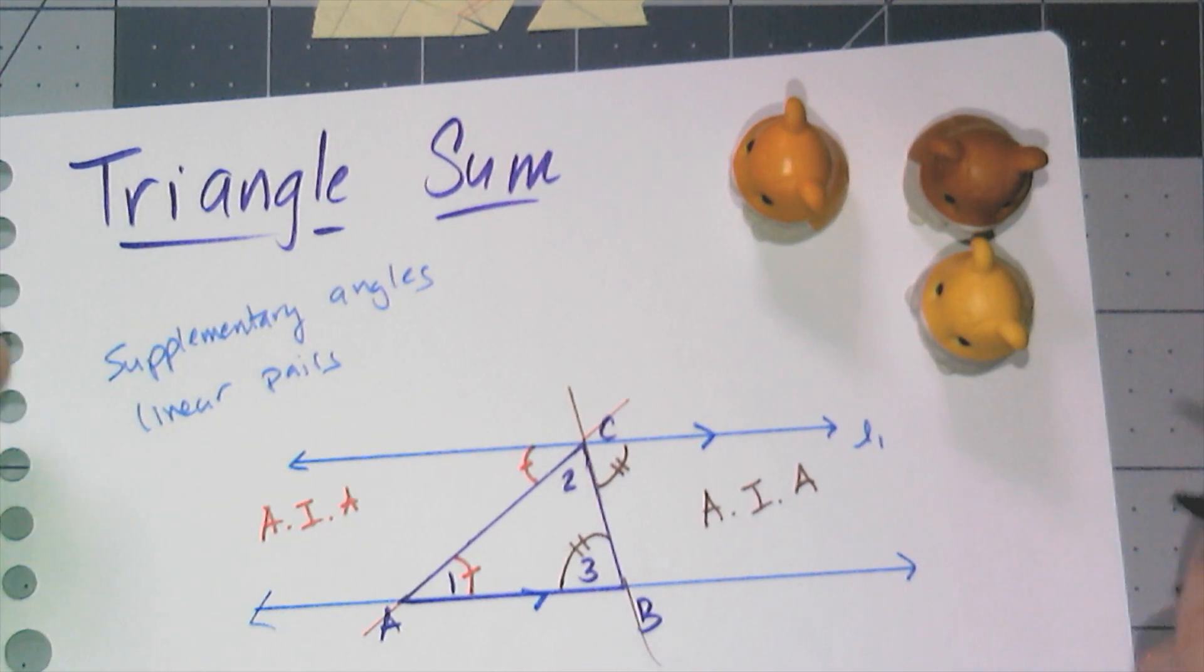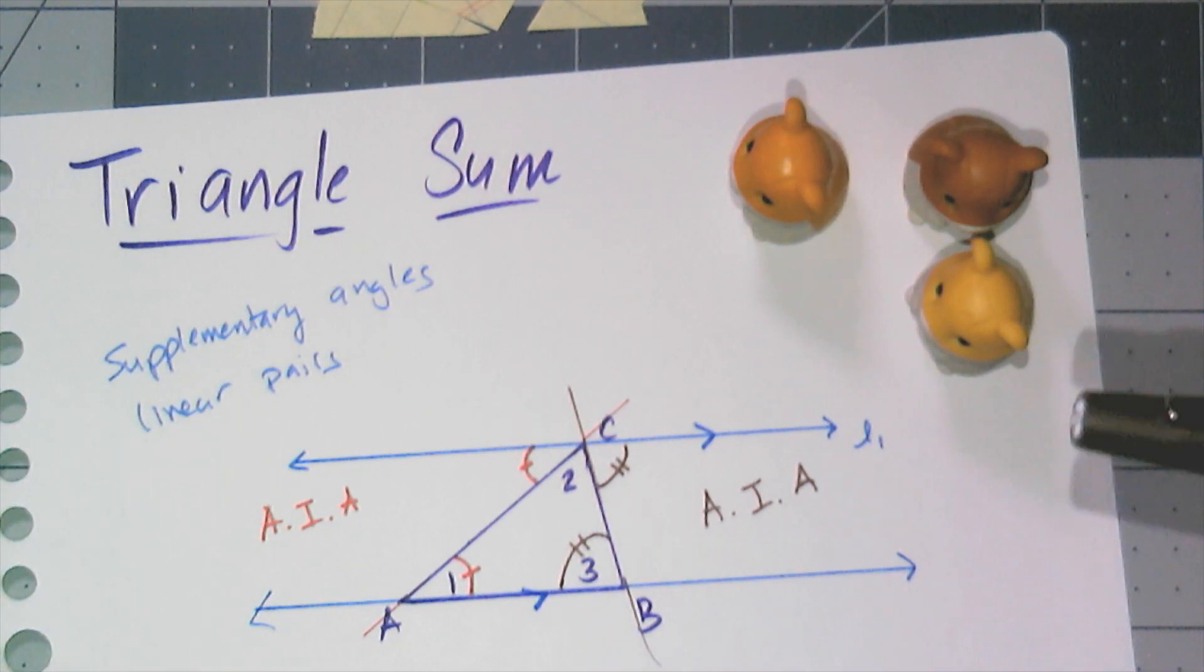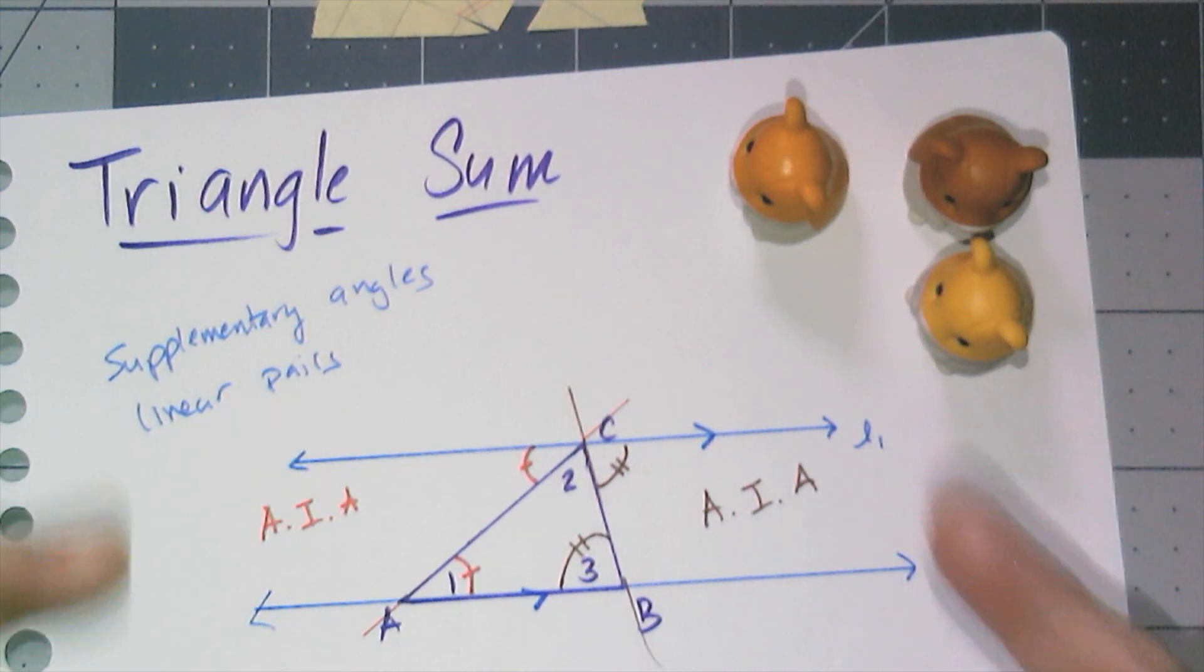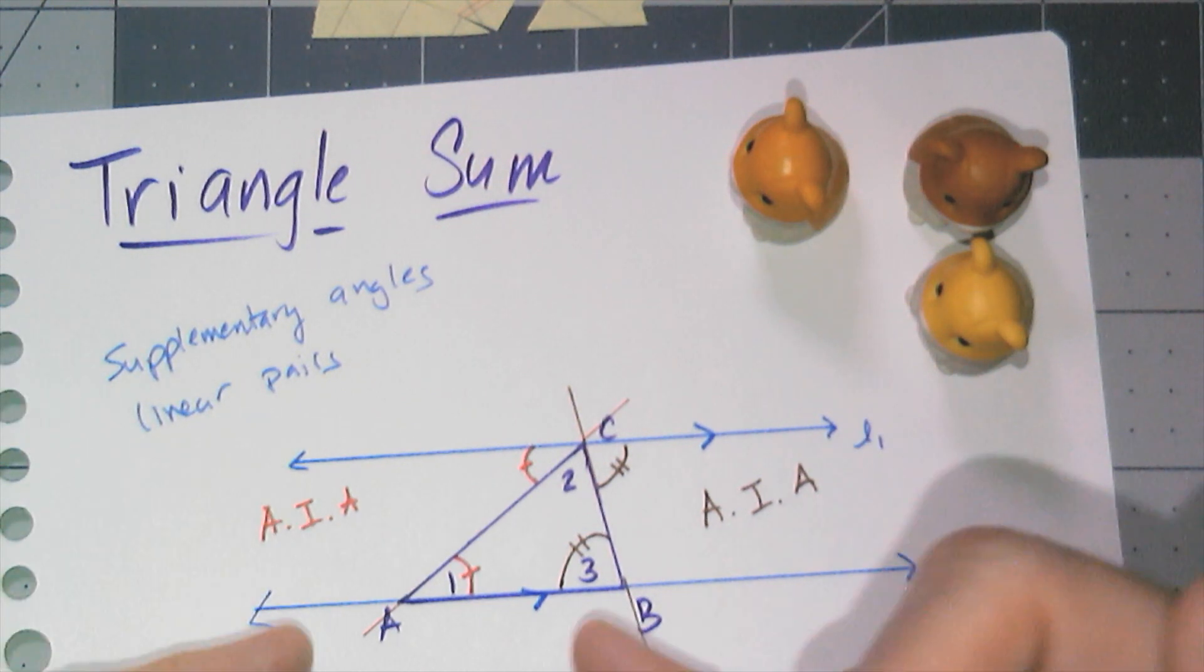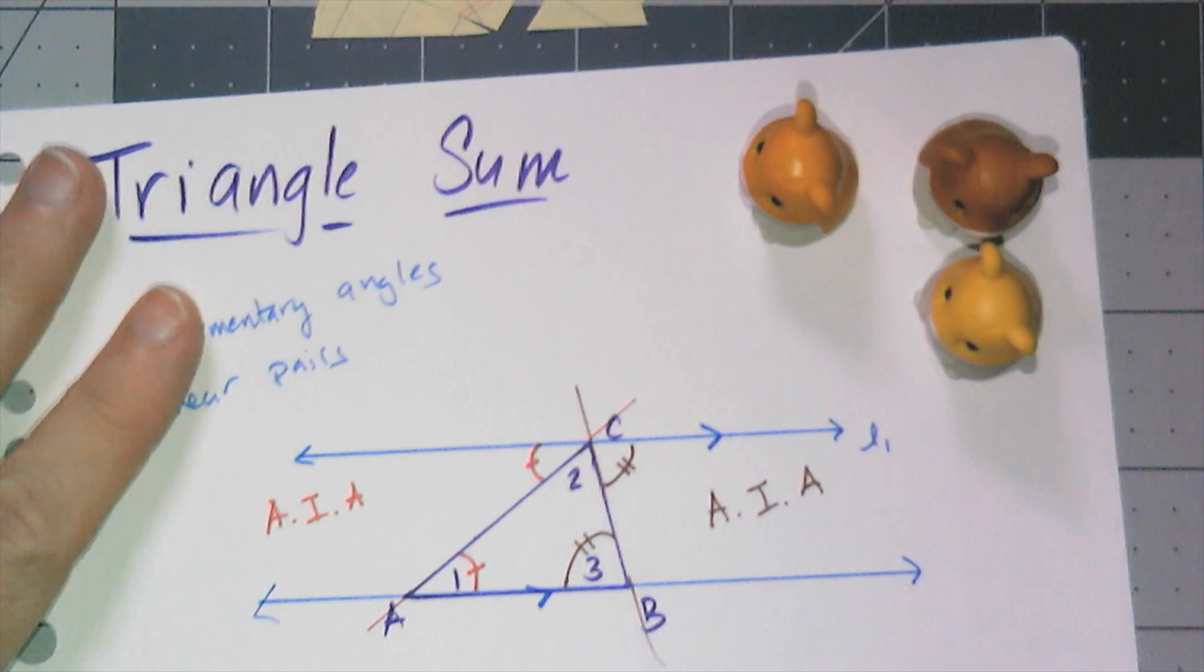Now this is not a formal proof by any stretch of the imagination. This is just an outline. And the key was me being able to add extra information through a construction. In this case, a construction of a set of parallel lines, okay? That gave me all of these congruent angles and the following conjecture.